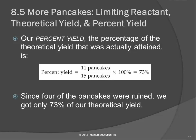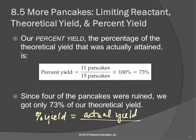And then percent yield. Percent is part over whole. The part that we're interested in — which is how many pancakes we actually made — divided by the theoretical yield. Percent yield is the actual yield divided by the theoretical yield, times 100%.